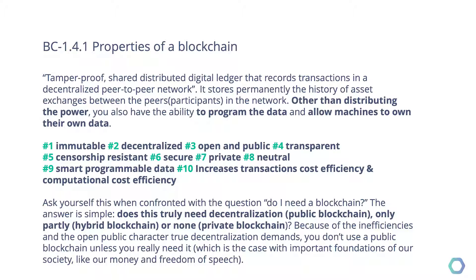It also depends on the moment in time — for example, Bitcoin in 2010 is a different Bitcoin than Bitcoin in 2019. As things change, these properties change with it, which is a good thing because different use cases will need a different set of properties. There are most likely way more than 10 properties, but these are the most commonly known. The first one is immutability — we have an immutable ledger. You can't alter the ledger; it's append-only, as in the case of the Bitcoin blockchain.